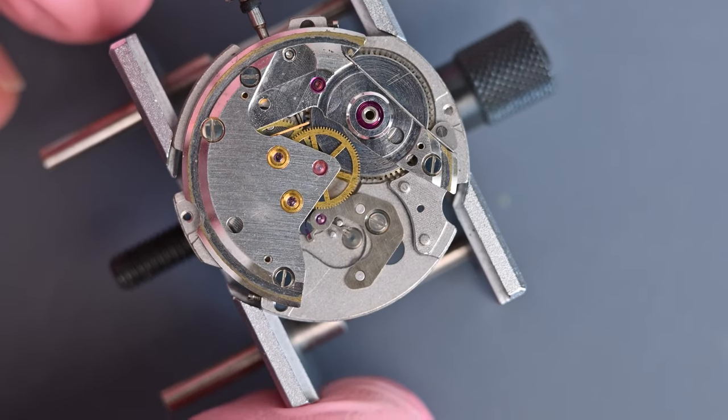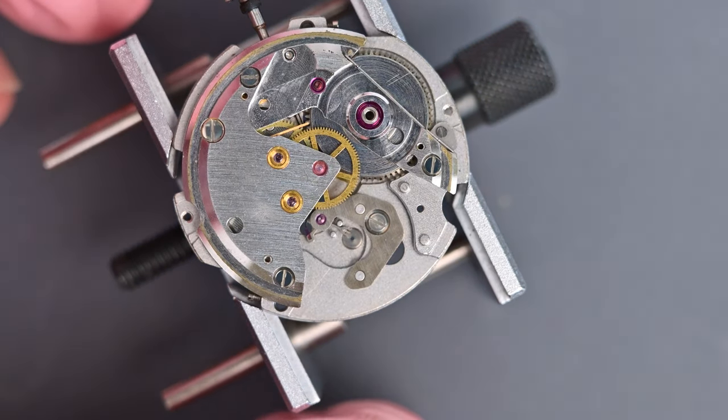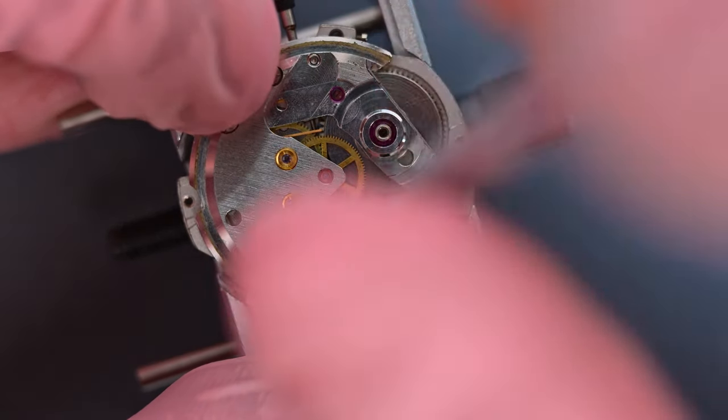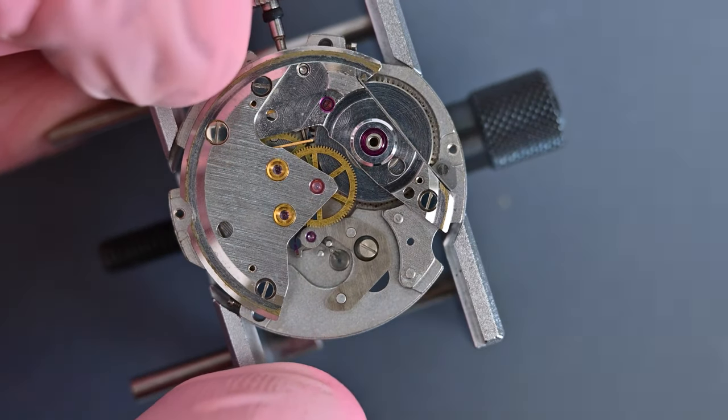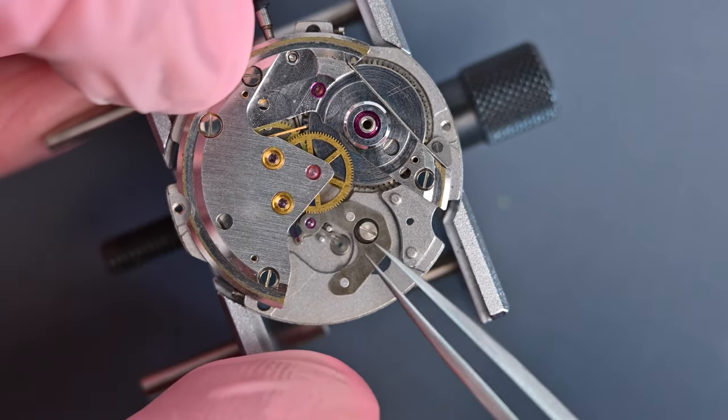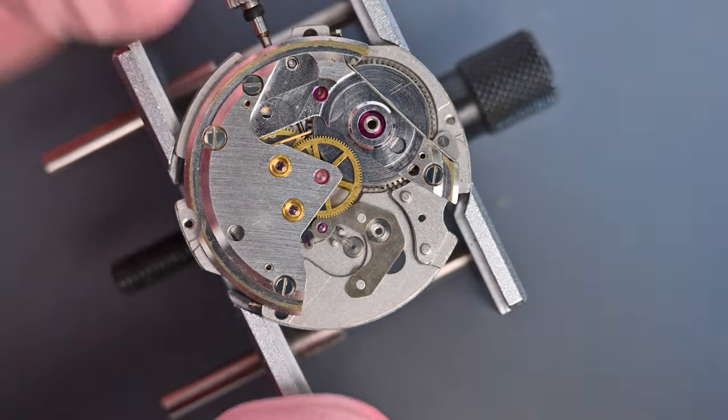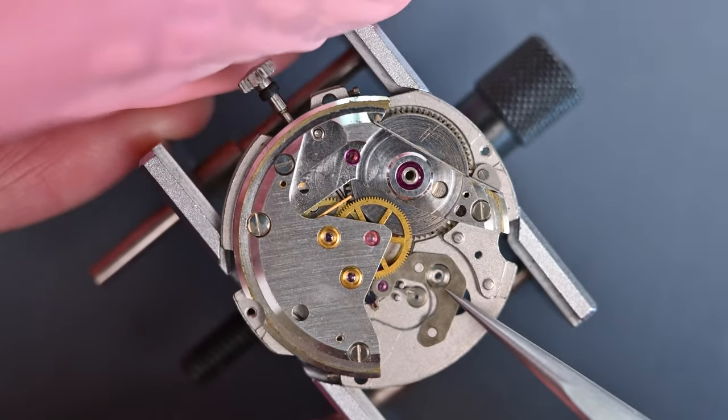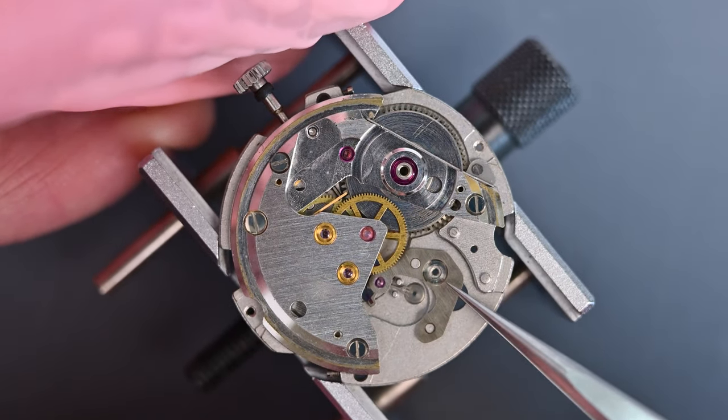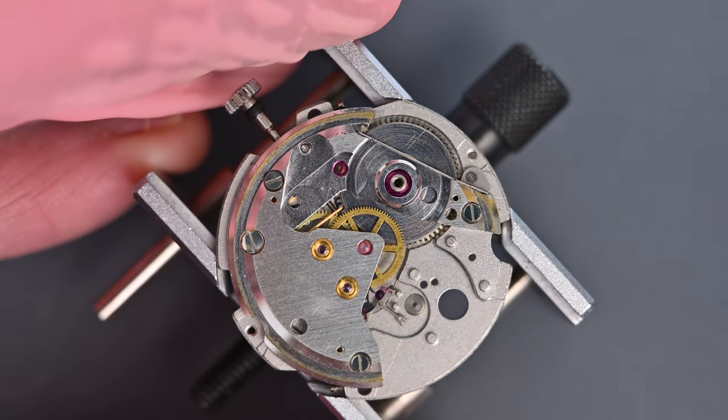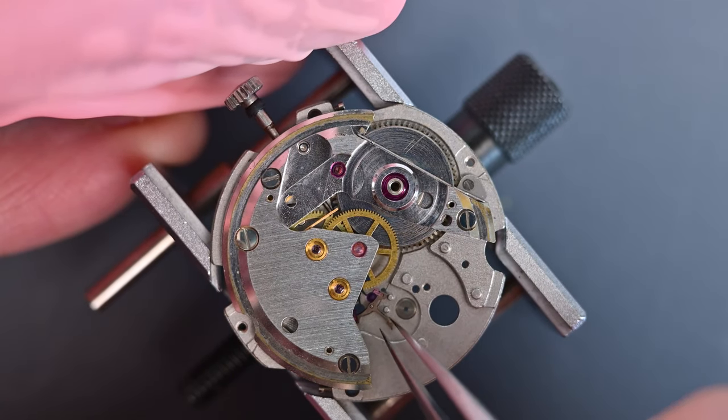I think we'll take out the pallet bridge next. That's quite tight. We'll remove the screw. And then we'll just lift it off and then remove the pallet fork.